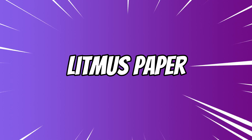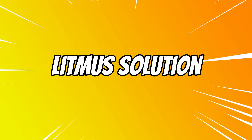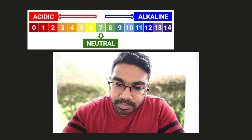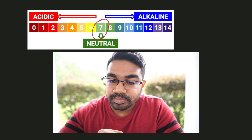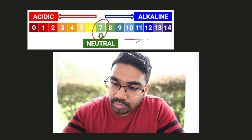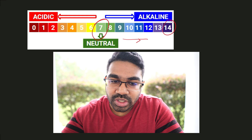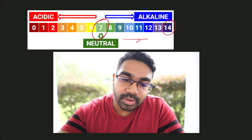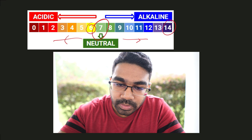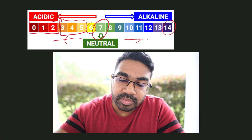There are many indicators we can use to test whether a substance is acidic, alkaline, or basic. One of the things we use is the universal indicator. For the universal indicator, the neutral color is green. As we become more and more alkaline, the color becomes more and more blue until the most alkaline pH is violet, purplish. On the acidic side, as we become more and more acidic, we first go through yellow, orange, and finally the most acidic side will be red.